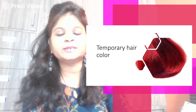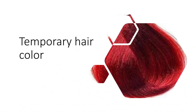Temporary hair color, as the term signifies, is not permanent — it fades off easily, remaining for a short duration of at least 3 to 4 washes. The reason is that the hair structure is divided into three parts: cuticle, medulla, and cortex. Temporary hair dyes are not able to reach the inner medulla and cortex; they only color the outermost cuticle layer. Since the color cannot penetrate the inner layers, it does not stay for long and fades off easily after 3 to 4 washes.